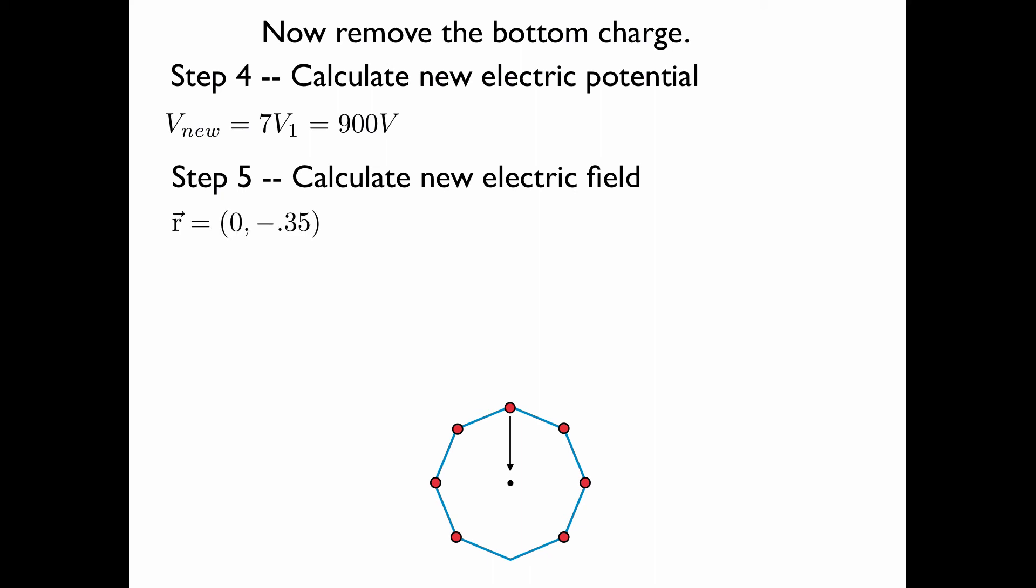In fact, the coordinates of this vector are zero comma negative 0.35, because it's 35 centimeters and it's downward. This is the formula for the electric field, and we can plug in the known values. Simplifying, we have the electric field in component form. You could also specify the electric field in terms of a magnitude in a direction by saying that it's 367 volts per meter pointed straight down or at negative 90 degrees.